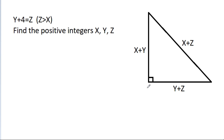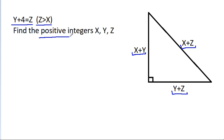In this video, we have a right-angled triangle with sides named x plus y, y plus g, and x plus g. And y plus 4 is equal to g, where g is greater than x. We have to find positive integers x, y, and g.